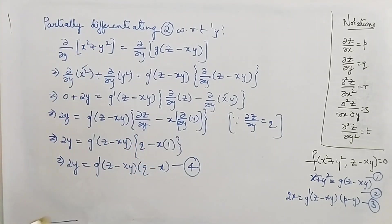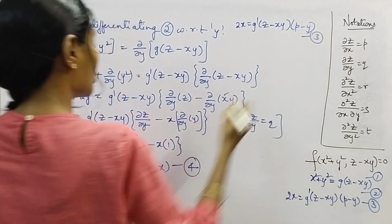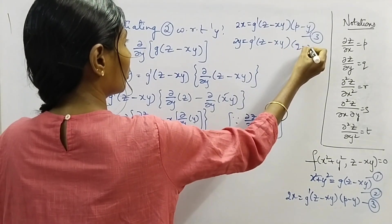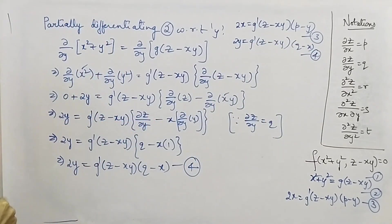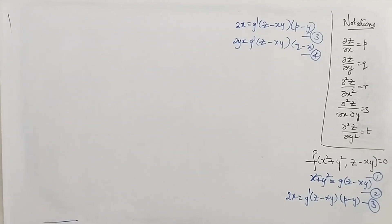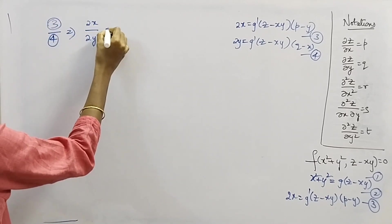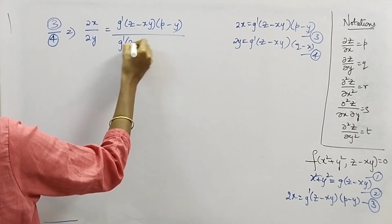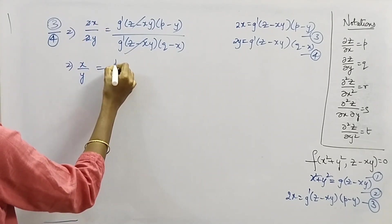Observing equations 3 and 4: equation 3 is 2x = g'(z − xy)·(p − y) and equation 4 is 2y = g'(z − xy)·(q − x). Since g' appears in both equations, we can eliminate it by dividing equation 3 by equation 4. The g' and the factor of 2 cancel, giving x/y = (p − y)/(q − x).